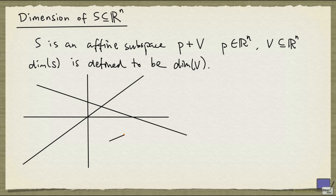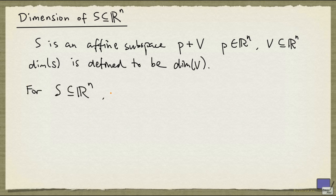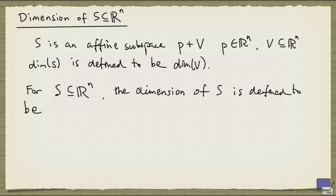But what about line segments or other point sets? What we're going to do is, if we are given any subset S of R^n, the dimension of S is defined to be the dimension of the affine hull of S.